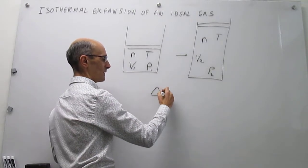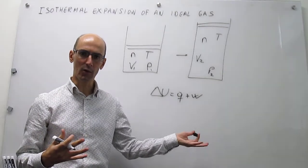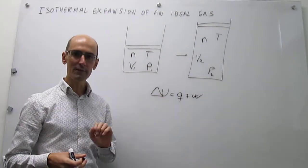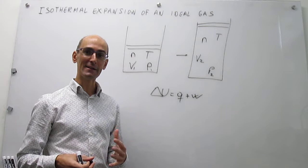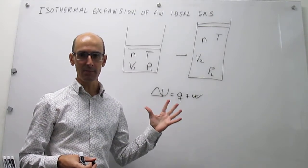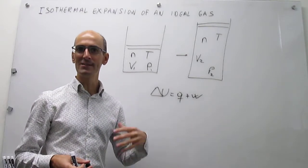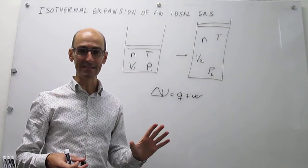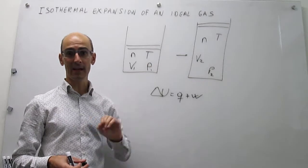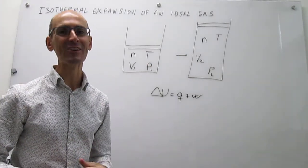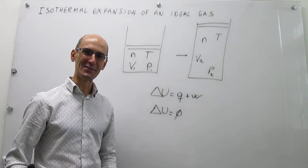Now, if we apply the first law of thermodynamics, the value of the change in internal energy is actually straightforward, because we know from the equipartition of energy principle that for an ideal gas, the internal energy — the average internal energy — only depends on temperature. For an ideal gas, that happens to be three-halves kT, and for molecular gases you have to incorporate rotations and vibrations, but regardless of what gas this is, the average internal energy only depends on temperature. If the temperature is not changing because the expansion is isothermal, that means there is no change in internal energy.